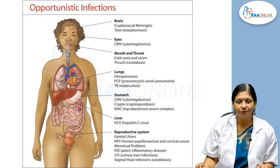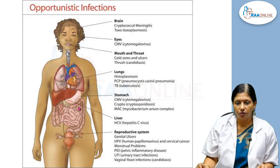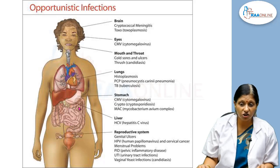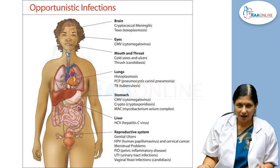In the stomach, there can be cytomegalovirus infection, cryptosporidiosis, and mycobacterium gut tuberculosis. In the liver, there can be hepatitis C virus. In the reproductive system, HIV infection can lead to genital ulcers, human papillomavirus, cervical cancers, menstrual abnormalities, pelvic inflammatory disease, urinary tract infections, and vaginal opportunistic yeast infections and candidiasis.